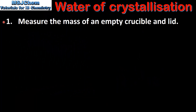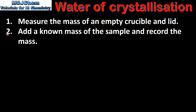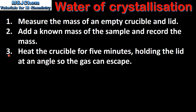Next we'll look at the experimental procedure for determining the water of crystallization. The first step is to measure the mass of an empty crucible and lid. Step 2 is to add a known mass of the sample and record the mass. Step 3 is to heat the crucible for 5 minutes, holding the lid at an angle so the gas can escape.